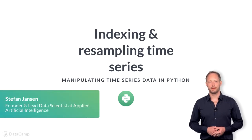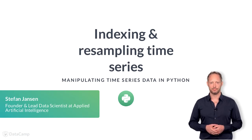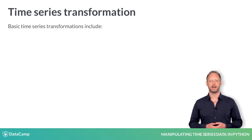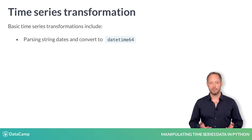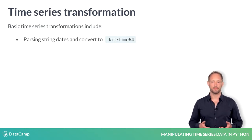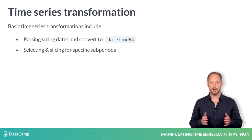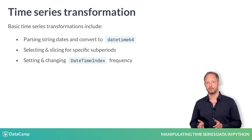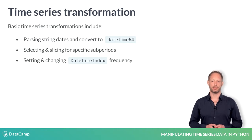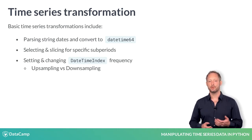In this chapter, you will learn about basic time series methods and transformations. These basic methods include parsing dates provided as strings and converting the result into the matching Pandas data type called DateTime64. They also include selecting sub-periods of your time series and setting or changing the frequency of the DateTime index, which can be set to a higher or lower value.